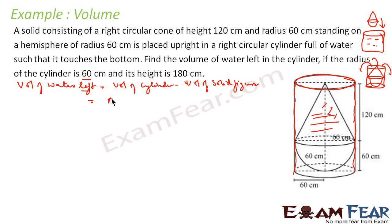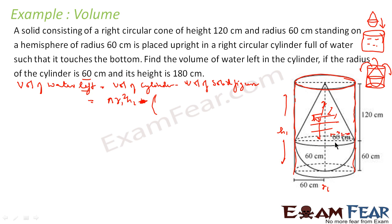Let the cylinder have radius r1 and height h1. Volume of cylinder = π·r1²·h1. For the solid figure, let the cone have height h2 and radius r2, with the hemisphere also having radius r2. Volume of solid = (1/3)·π·r2²·h2 + (2/3)·π·r2³.